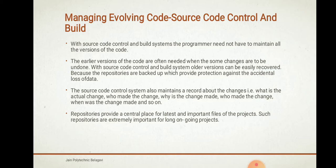Older versions can be easily recorded because repositories are backed up, which provides protection against accidental loss of data. When the code evolves, to retain the older versions, source code control and build system will be used. The source code control system also maintains a record about the changes — what the actual change is, who made the change, and why the change was made.